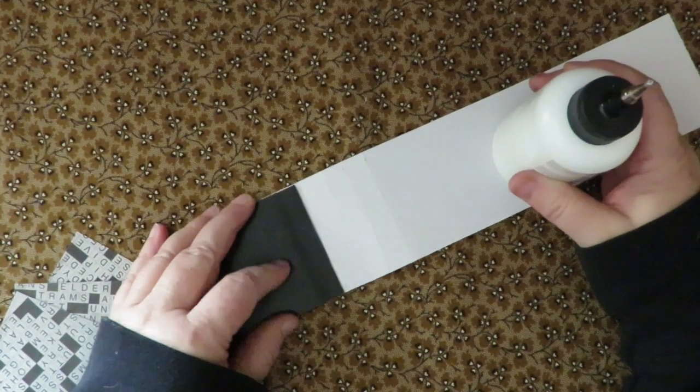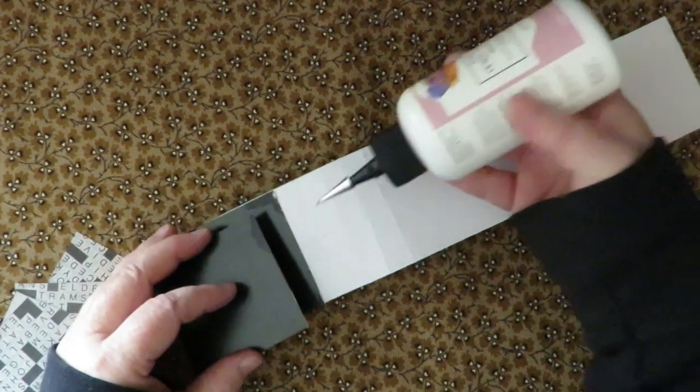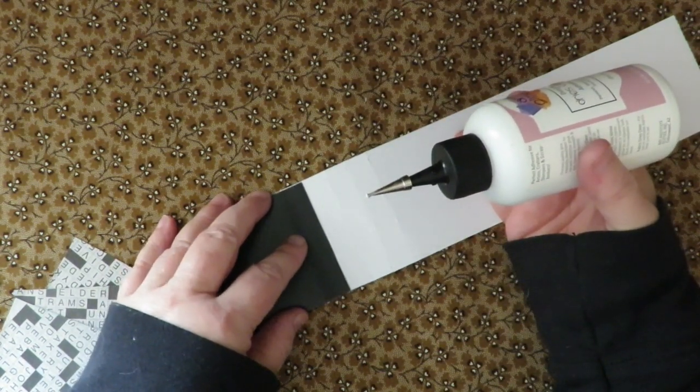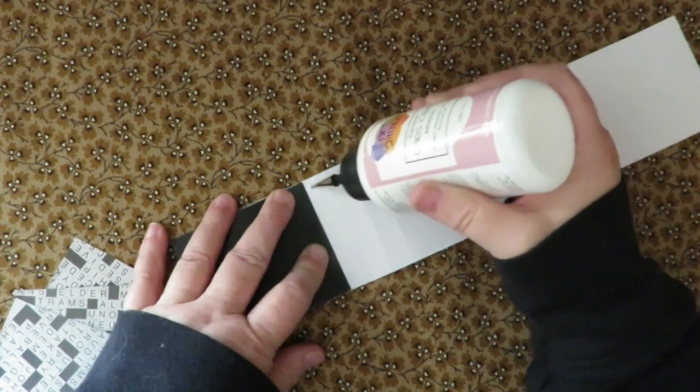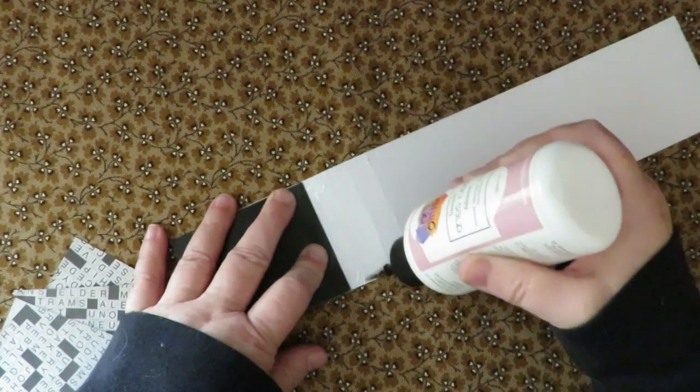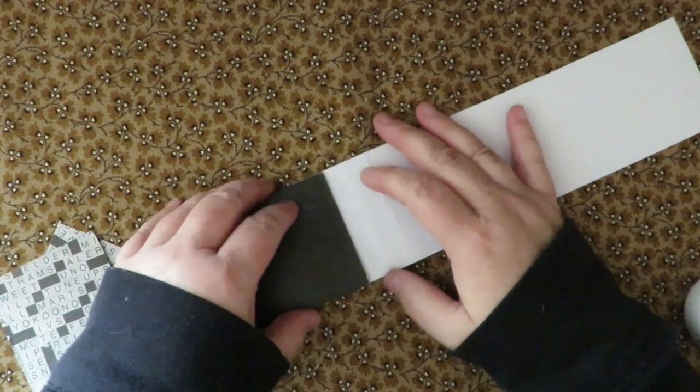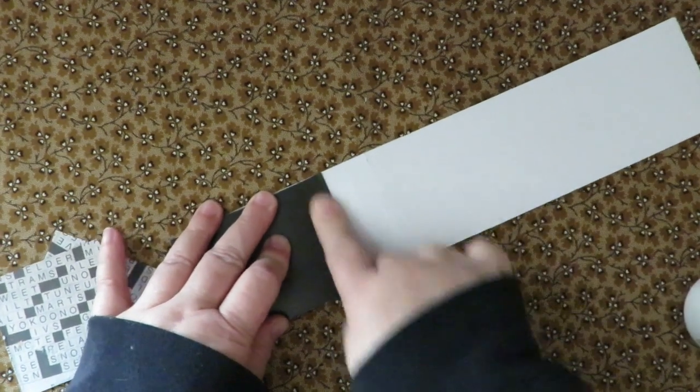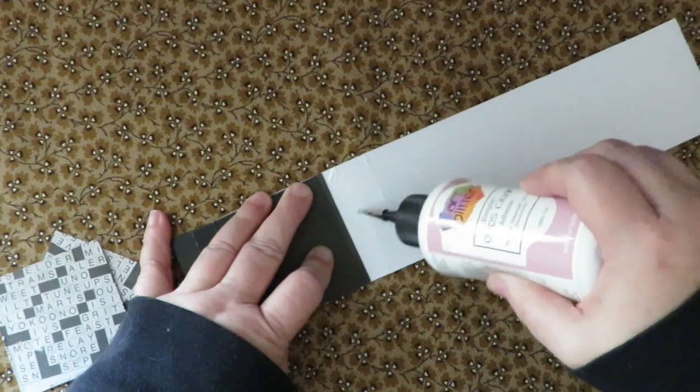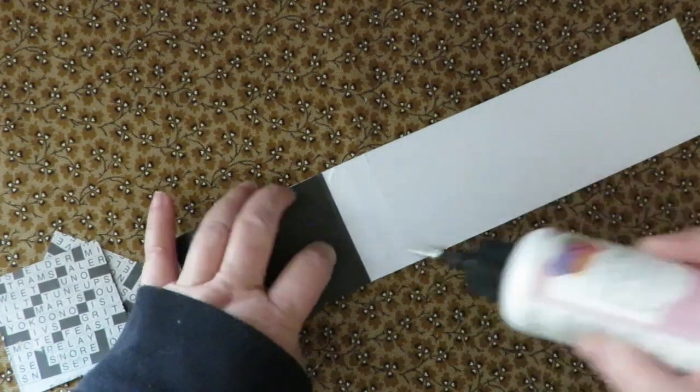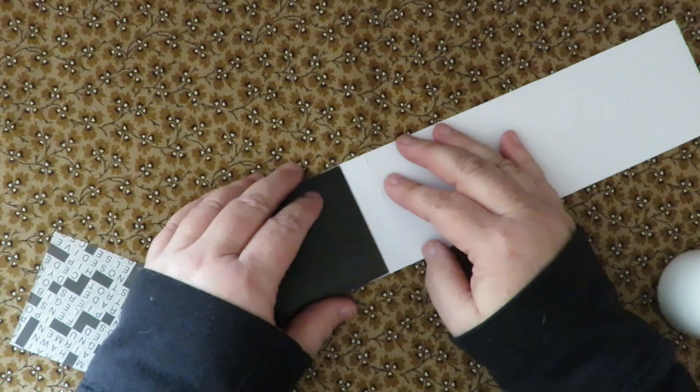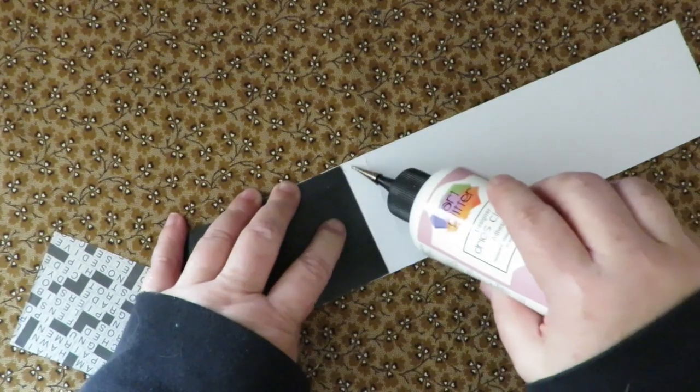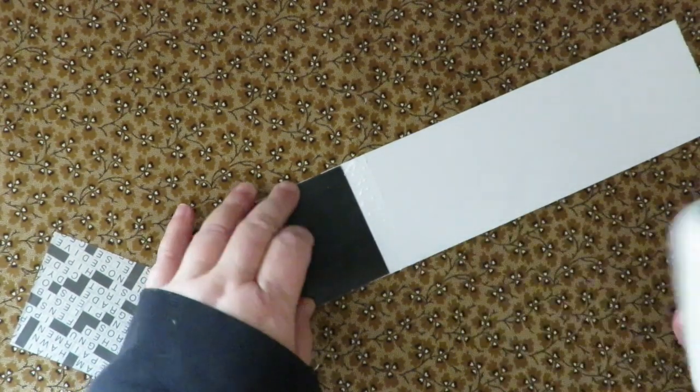So now you glue the next section and put your next card. And you continue on until you have all five cards in their little half inch scored squares. And then what I like to do is to take some binder clips and clamp it all together, clamp it all nice and tight and then let it completely dry.